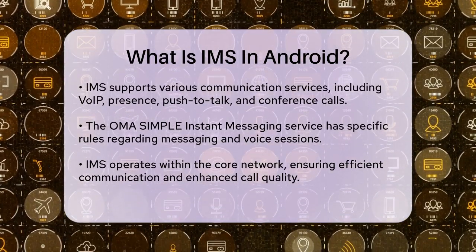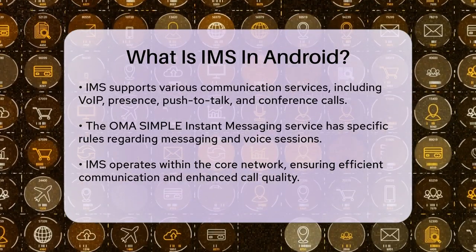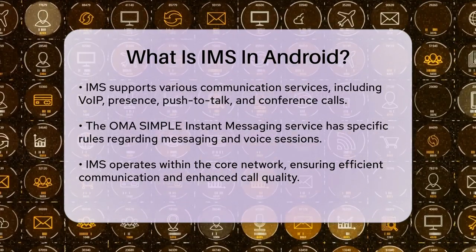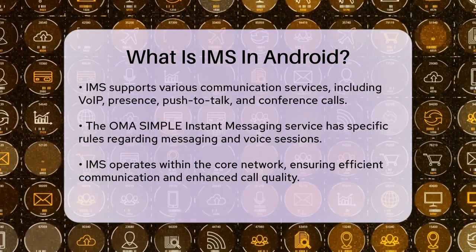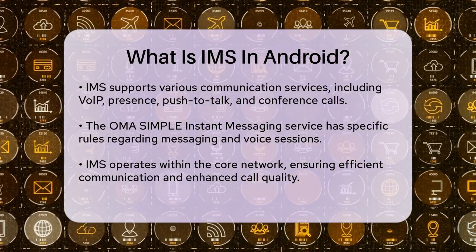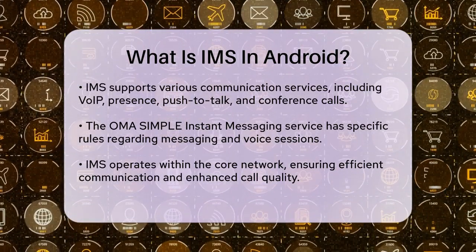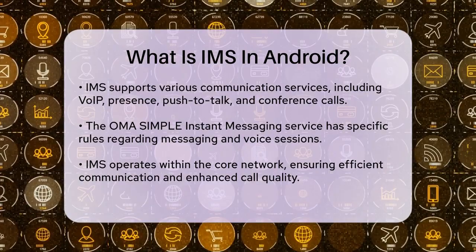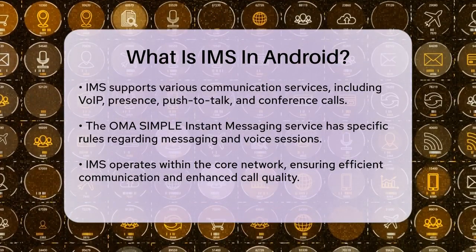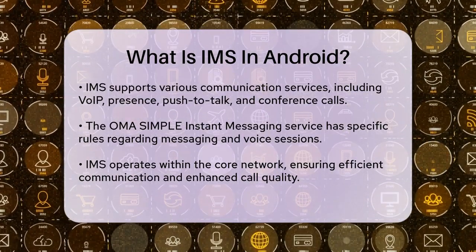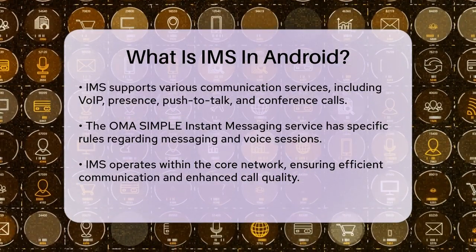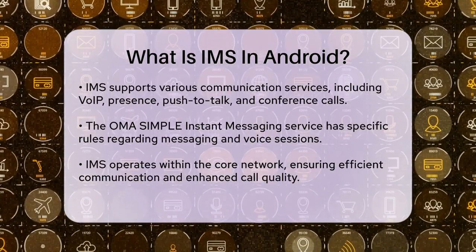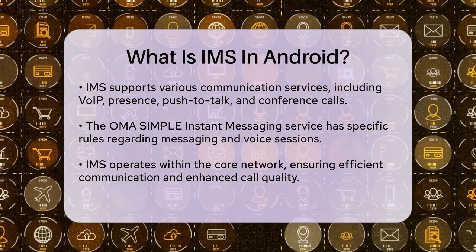On your Android device, the IMS service operates within the core network, ensuring smooth communication. It provides enhanced call quality through VoLTE and advanced messaging features through RCS. Users can also make calls over Wi-Fi connections, which is particularly useful in areas with weak cellular reception.